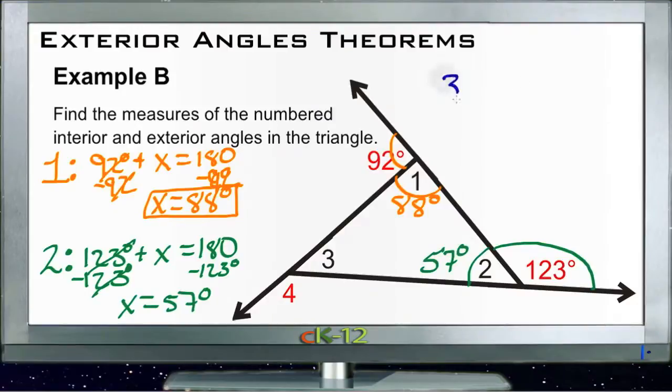Now for angle 3, which is down over here. Angle 3, we can't do that same thing anymore because 3 and 4 form a linear pair, but we don't know either one at this point. So we're going to use something else. We can use the triangle sum theorem, which tells us that 88 plus 57 plus angle 3 equals 180 degrees.